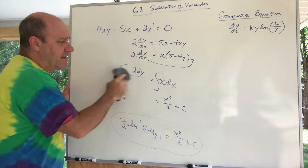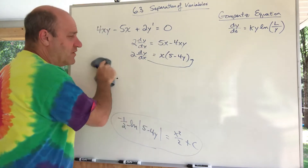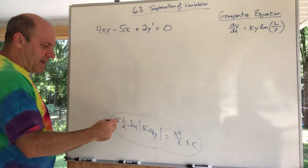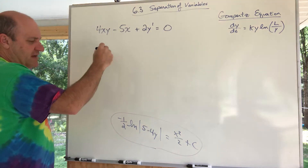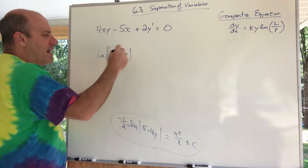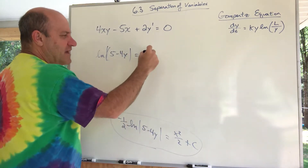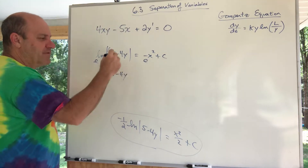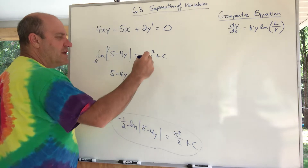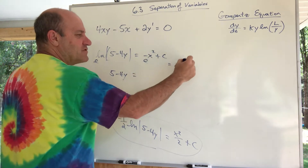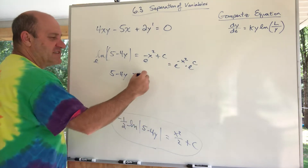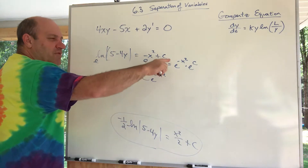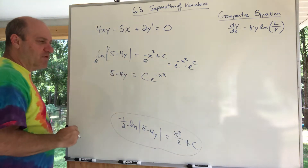To solve for y, I need a little more room. I'd multiply both sides by negative 2, so the natural log of (5 minus 4y) equals negative x squared plus C. Then I exponentiate both sides — e to both sides — which drops the absolute value: 5 minus 4y equals e to the (negative x squared) times e to the C. That e to the C I just call C, so it becomes C times e to the negative x squared. A plus C got turned into a multiplied C — that's an important move.